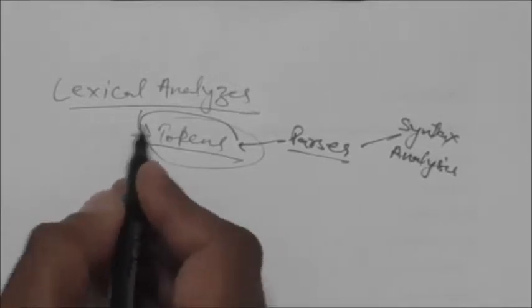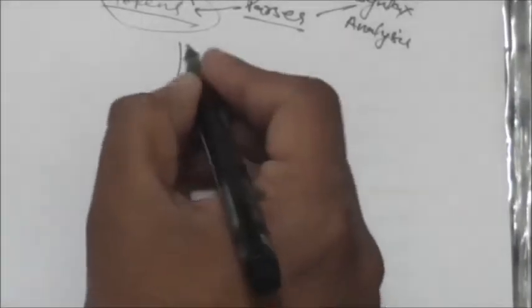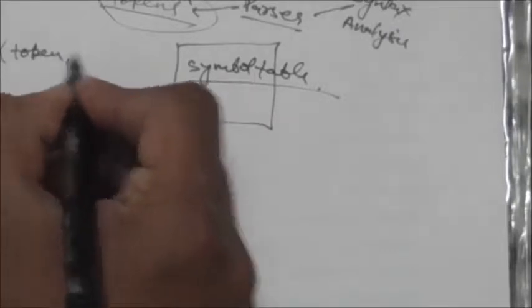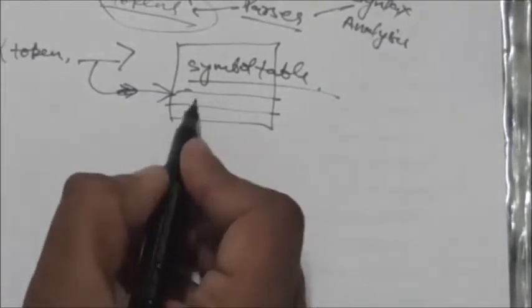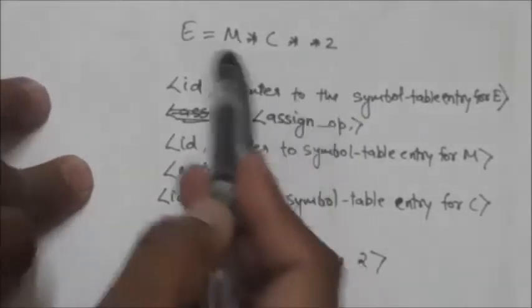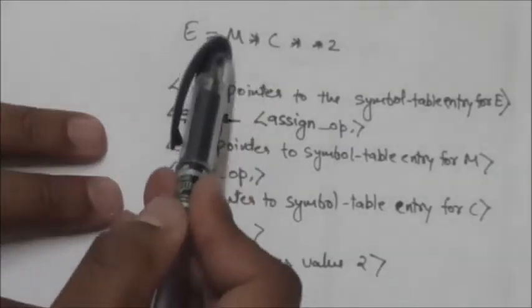The lexical analyzer collects information about tokens and keeps that information in a symbol table. An attribute is associated with each token, and that attribute is a pointer to the entry in the symbol table where the information about that token is stored.